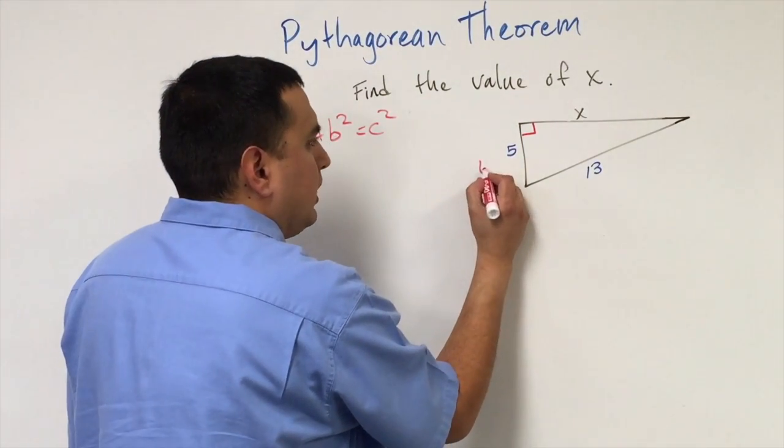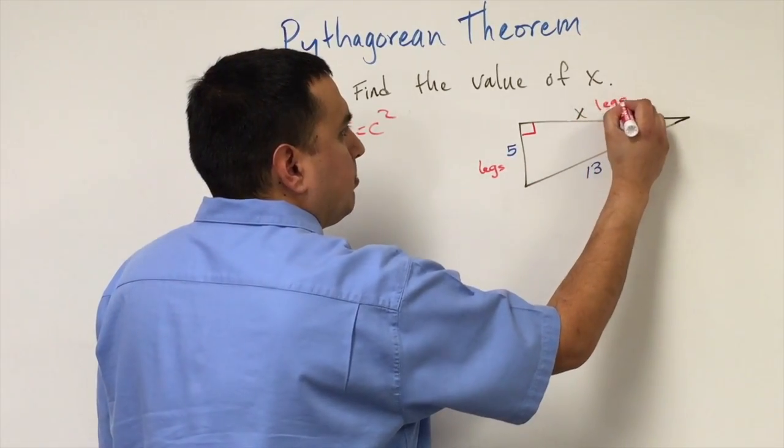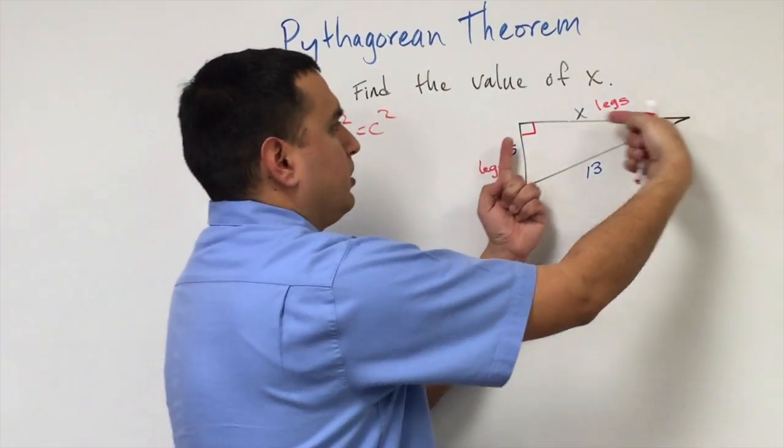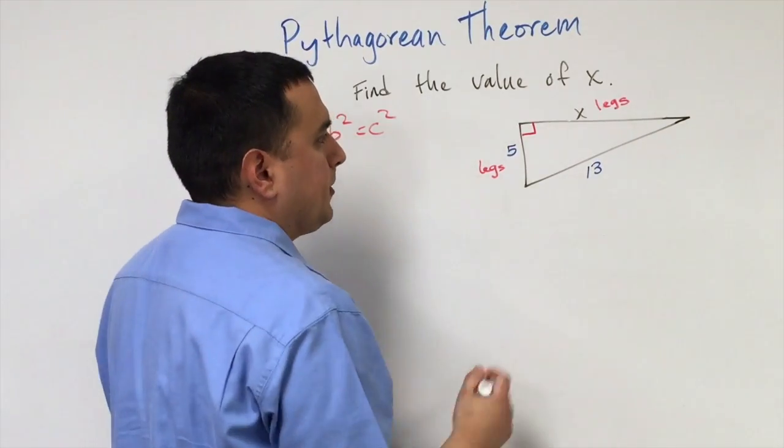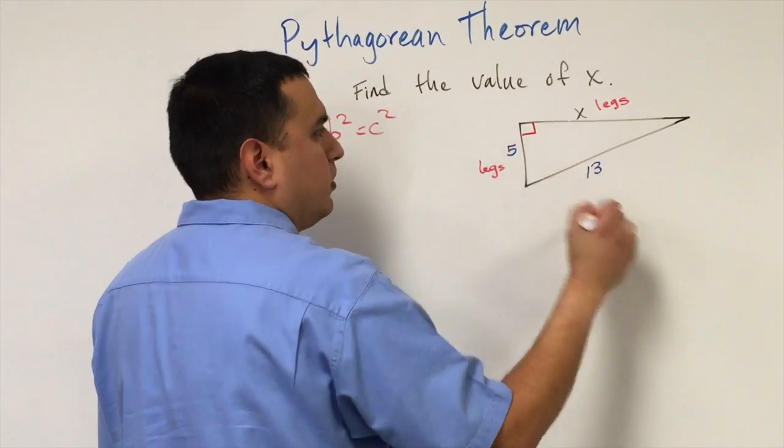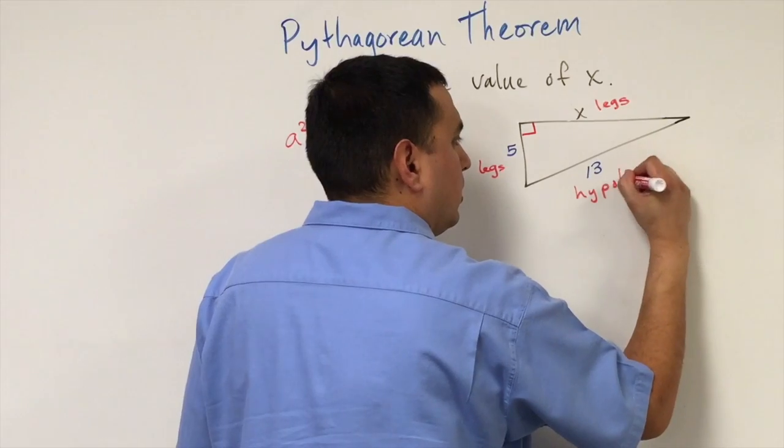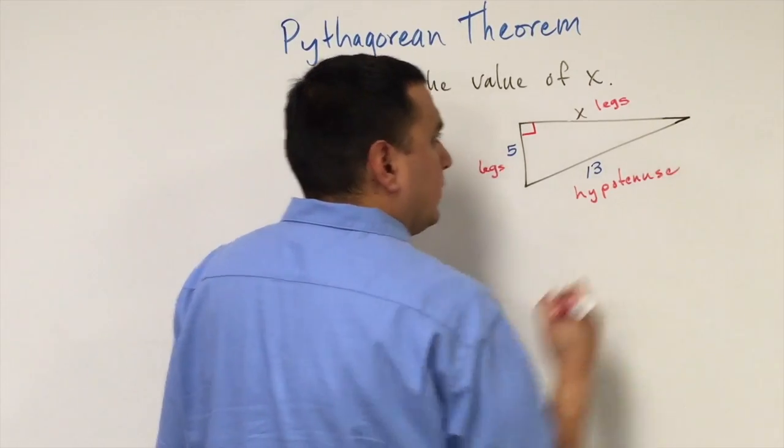Just as a review, the legs are the two sides that make up or that join together to make the right angle. This side right here that's across the right angle, that's what we call our hypotenuse.